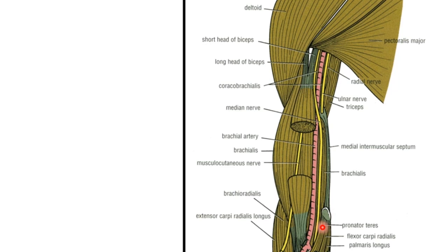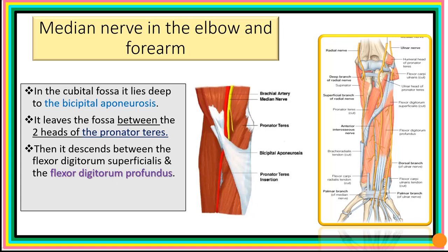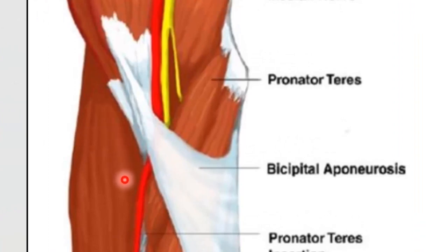To summarize: at the upper part of the arm, the median nerve lies lateral to the brachial artery. At the middle of the arm it crosses the brachial artery. Throughout the lower half of the arm, the median nerve runs medial to the brachial artery up to the elbow. In the cubital fossa, we will see it lying deep to the bicipital aponeurosis. Here is the cubital fossa, the median nerve, and the bicipital aponeurosis — running deep to it at this point.